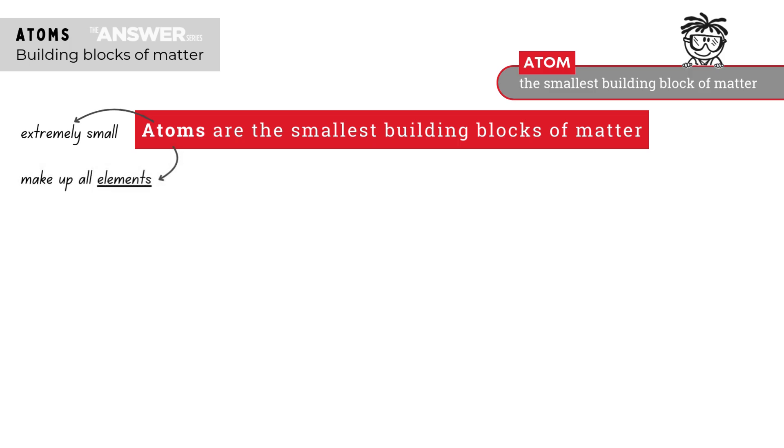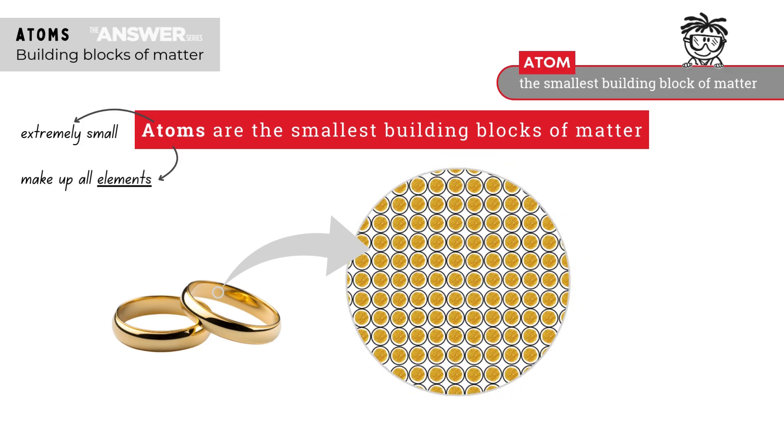Elements are made up of many of the same kind of atoms. For example, if we took a ring made of gold and zoomed in to its microscopic or atomic structure, we would see that it is made up entirely of the element gold, of which the chemical symbol is Au.